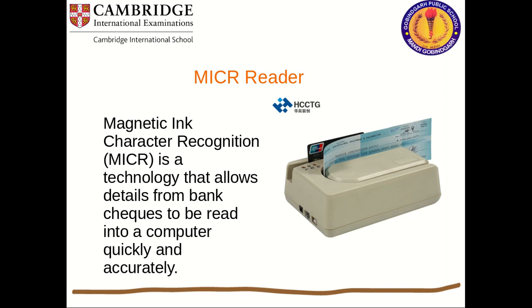MICR — Magnetic Ink Character Recognition — is a technology that allows details from a bank check to be read by a computer quickly and accurately. If you enter the check number manually through a keyboard it may be wrong and it is a slow process. But using the MICR reader, it directly reads the characters on the check. The bank manager doesn't need to enter anything manually; the machine reads it quickly and accurately.